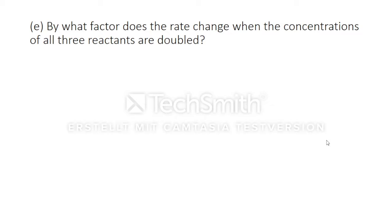Second to last, by what factor does the rate change when the concentrations of all three reactants are doubled? We double all those concentrations. The exponents of the concentrations lead to our factor. So, two to the power of zero times two to the power of two times two to the power of one equals eight.